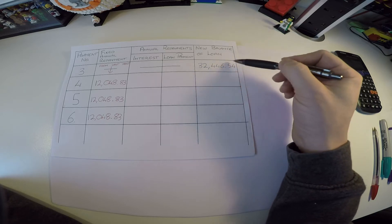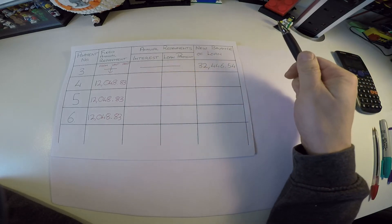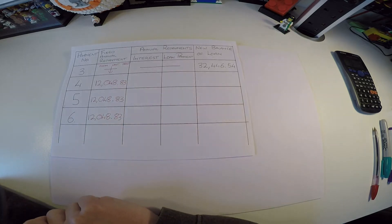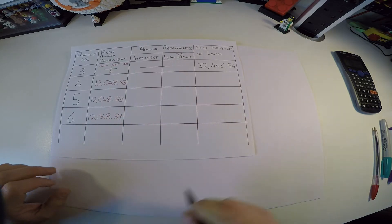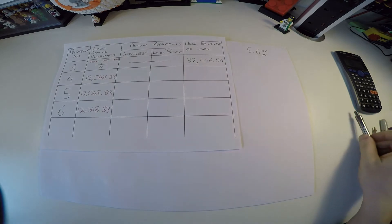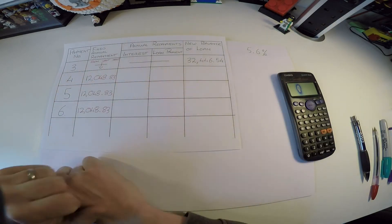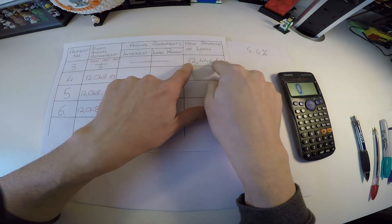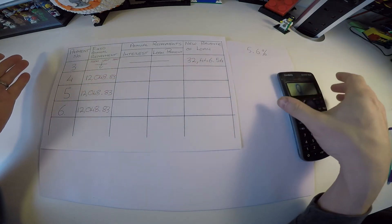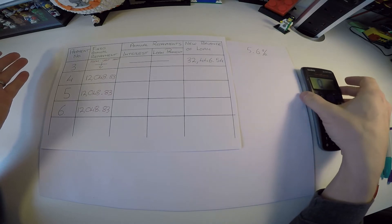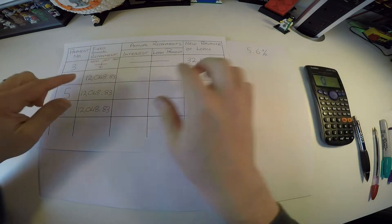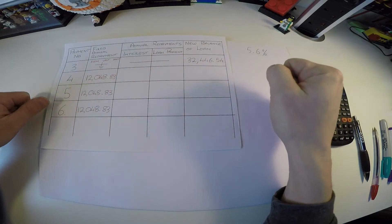Her annual repayment amount is 12,048.83 and the interest rate is 5.6%. What actually happens in a loan: she owes this much, makes her year 4 payment, but not all of it comes off the loan. In the early years of a mortgage you're paying mostly interest. Depending on the balance, some of your payment goes toward interest and the rest reduces the loan principal.